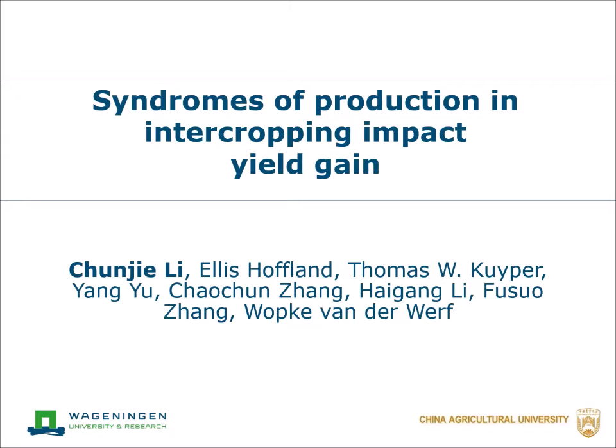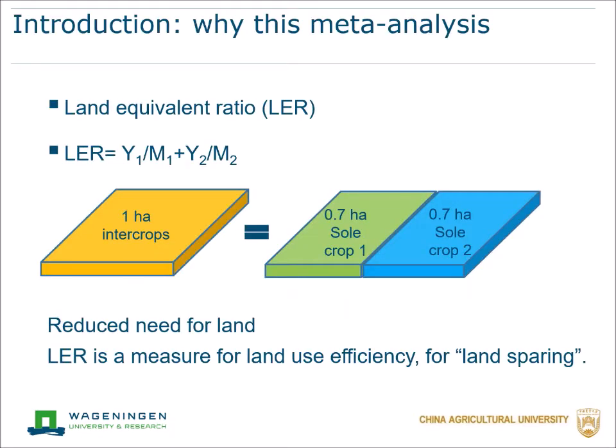The title is 'Syndromes of Production in Intercropping: Impact on Yield Gain.' First, why did I do this meta-analysis? We know that LER is commonly used to assess whether there is over-yielding by intercropping. It is the sum of the relative yields of two species. LER larger than one means more land is needed for sole crops to produce the same yield as in intercrops.